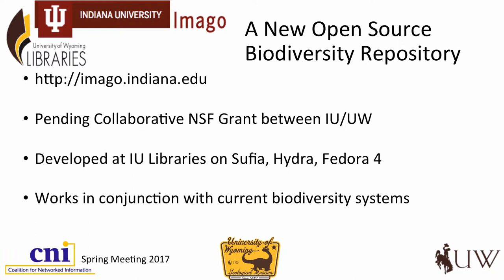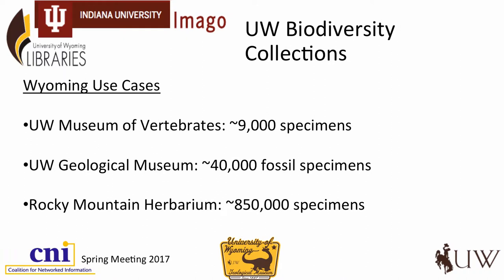I'm going to shift gears and talk about Imago, because this really dovetails with the paleontological digitization project. We're also working on our campus with our herbarium, which is one of the biggest in the country — we have almost a million specimens in that collection. Imago is really built to work with current biodiversity systems. This system is being built on Sophia Hydra and Fedora 4. It's available now at imago.indiana.edu, where they've been mostly working with herbarium specimens up to this point. We just presented about this at ACRL a couple weeks ago.